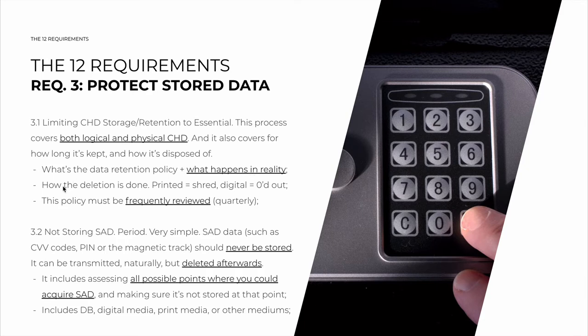You also need to clarify how the deletion is done. Printed data can be shredded or burned, and digital data such as hard drives can be securely deleted by zeroing out the deleted data. Or in the case of physical destruction, they can be demagnetized, shredded, or others. The key here is use common sense and have a procedure. This policy must be frequently reviewed — at least quarterly — because technology changes, your infrastructure changes, and your data retention policy needs to keep up with those.